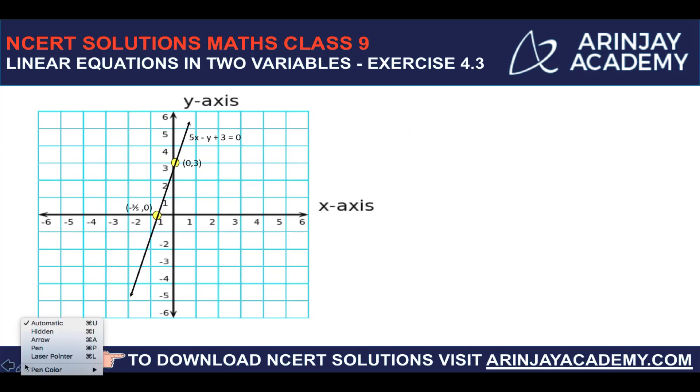So here basically what I have done is I have just taken 0, 3 was one point. So x value is 0, y is 3. So this is the point marked in yellow out here.